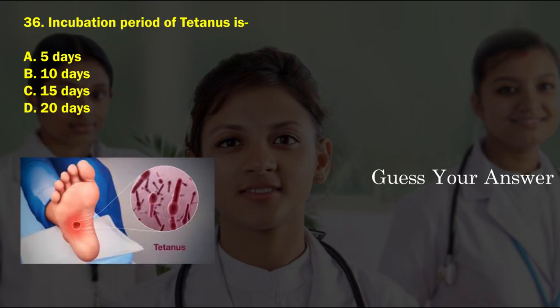Incubation period of tetanus — option A: 5 days, option B: 10 days, option C: 15 days, option D: 20 days. The correct answer is option B, 10 days.